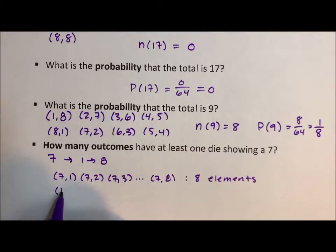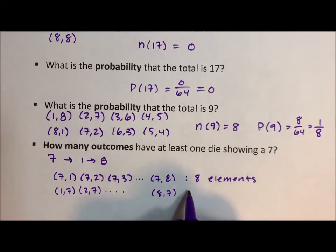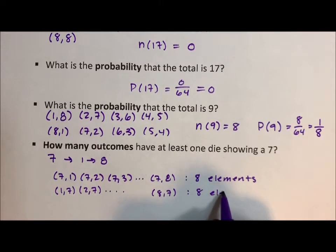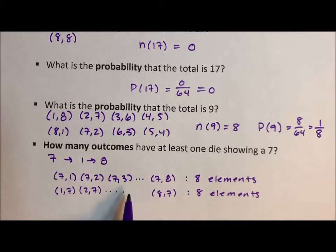Similarly, you could have (1,7), (2,7), all the way up to (8,7) - that's another 8 outcomes. But both lists include (7,7), which is an overlap counted in both lists. When you have an overlap counted twice, you have to subtract it out.